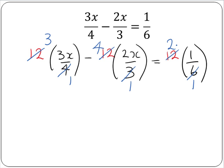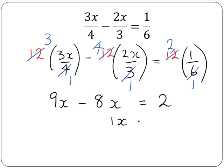Now we multiply out the brackets and solve as we would with a normal equation. 3 by 3x gives us 9x. 4 by 2x gives us 8x, and we get a minus, so minus 8x. And 2 by 1 gives us 2. So 9x minus 8x gives us 1x. And if 1x equals 2, then x equals 2. So our equation is solved.